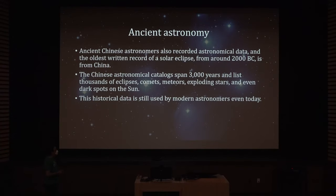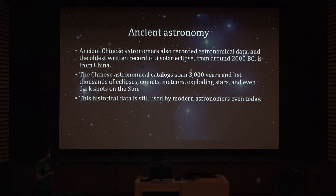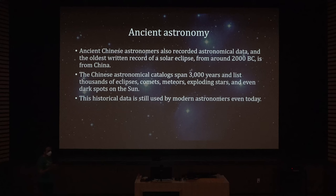The Chinese astronomical catalogs span 3,000 years and list thousands of eclipses, comets, meteors, exploding stars, and even dark spots on the sun. This historical data is still being used by modern astronomers today. If you want to know certain things about what's happening today, you may need to look at data from thousands of years ago to see how things have changed — so this is very important even for modern research.